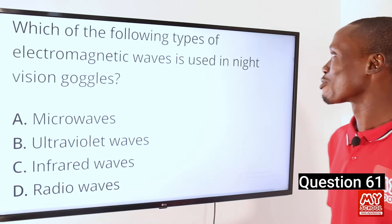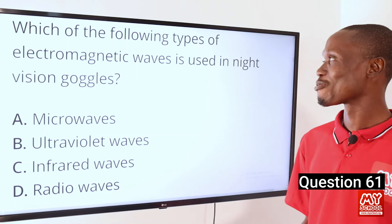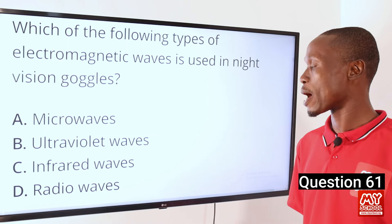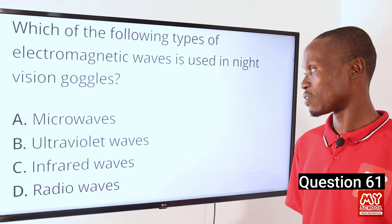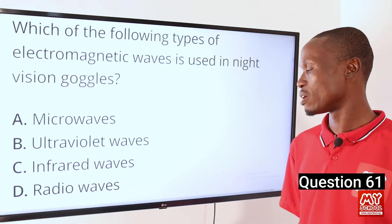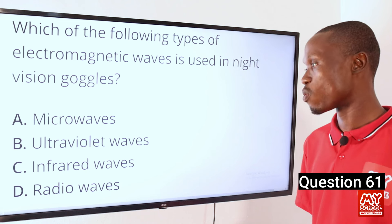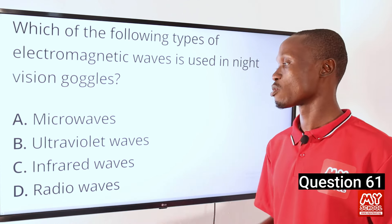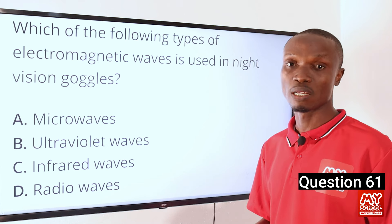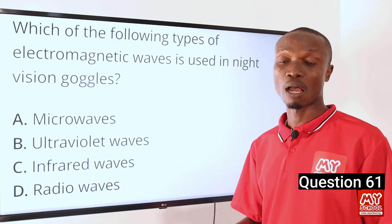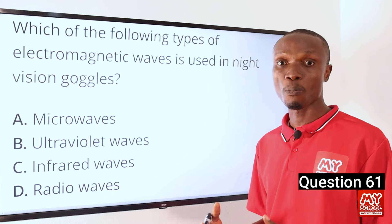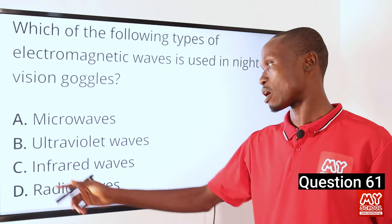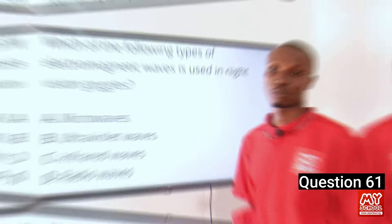Question 61. Which type of electromagnetic wave is used in night vision goggles? Options: A, microwave; B, ultraviolet waves; C, infrared waves; D, radio waves. The answer is option C, infrared waves. Infrared waves are used in night vision goggles because they can penetrate darkness, and anyone wearing such goggles will be able to see objects clearly in the dark.